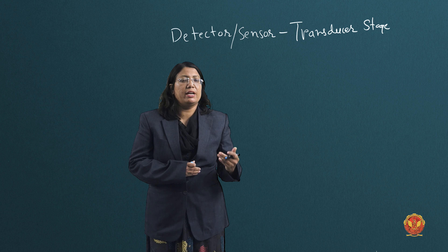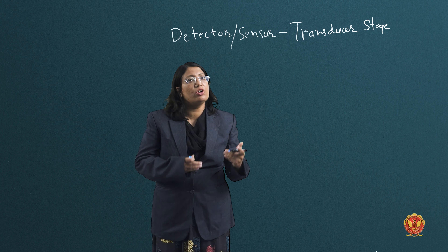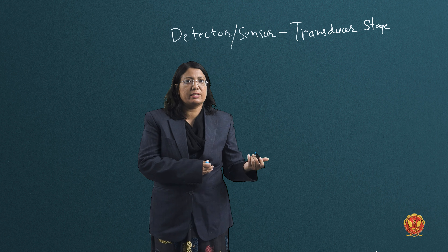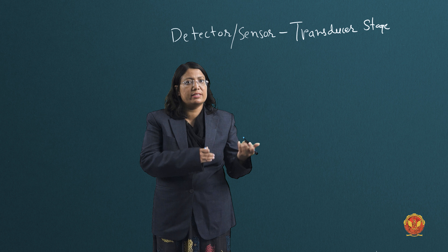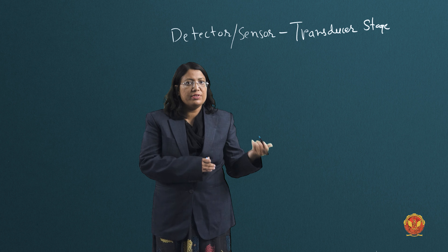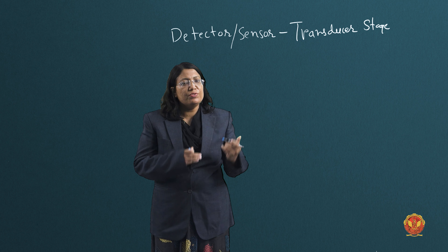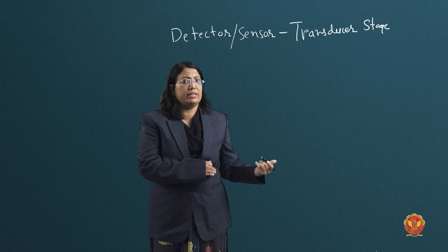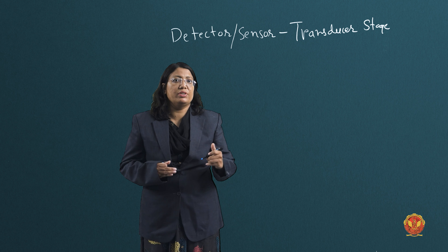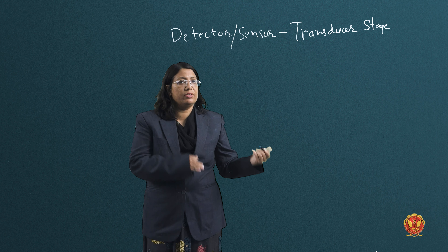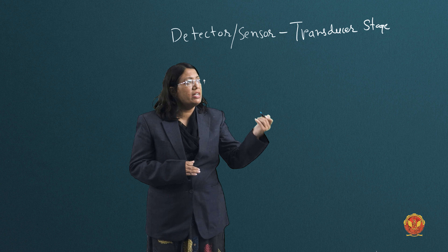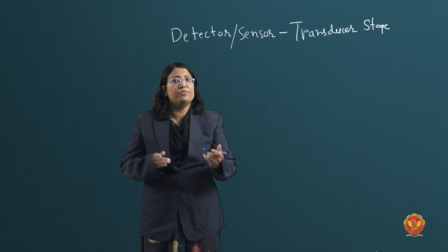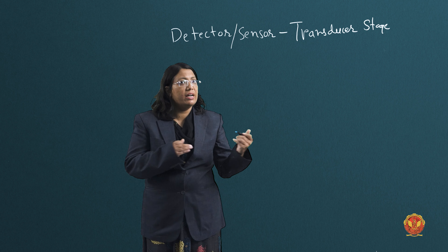The output of a sensor can be in electrical form or non-electrical form. It can give acceleration, distance, or another physical quantity. We cannot drive that physical quantity through the subsequent stages directly, so we need to convert that form of energy into another form — this is the transducer. A transducer is an electronic device which converts one form of energy into another form.